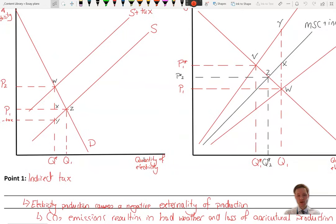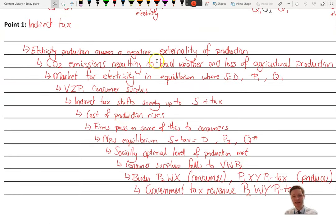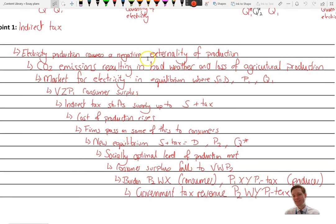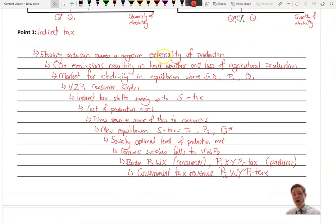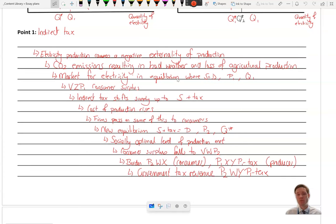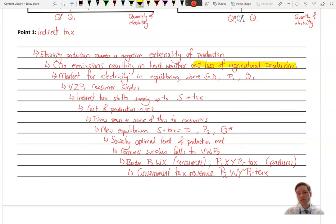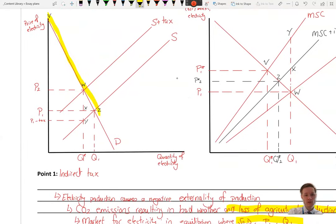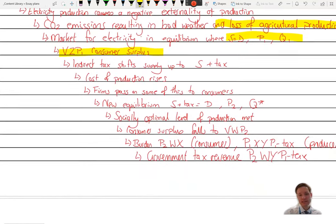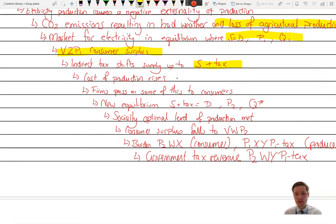We want to first of all start off by understanding that electricity causes the negative externality. We want to show understanding of that and what that externality is. Now, you can make a quick reference to, for example, farmers. They are having impacts from weather on their crop yields, and they will be having lesser production. Just be careful here because this isn't necessarily directly an externality question, but a quick reference to that shows you understand why we are trying to reduce output in this market. You want to then make sure that you have referred to all areas of the diagram, including the consumer surplus and the initial equilibrium.